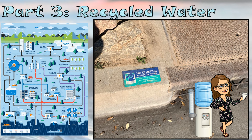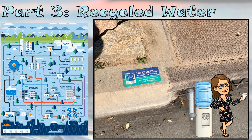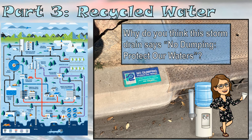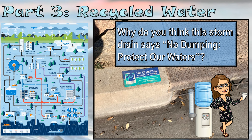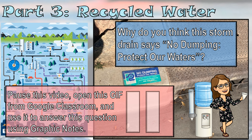This is a picture of a street near my house. This is a storm drain, and the sign on the storm drain says 'No Dumping — Protect Our Waters.' I want you to pause and answer this question: why do you think this says 'no dumping, protect our waters'? Dumping means anything being poured down that drain that shouldn't be there — it could be paint, oil, or chemicals.